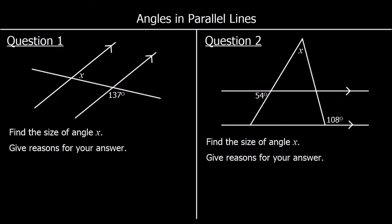Angles in parallel lines. We have two parallel lines here, marked with arrows, so these two lines run in exactly the same direction. When we have a line that goes through parallel lines, it makes the exact same angles when it meets both the lines. So this 137 degrees angle is going to be exactly the same as this angle here — they are corresponding angles.